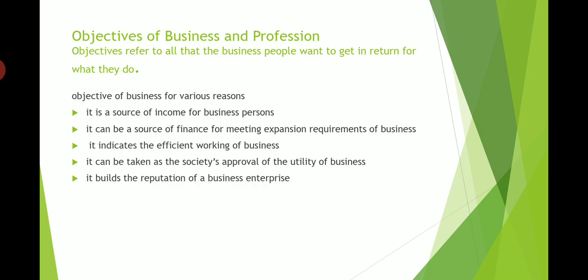Now I think you will have some idea of what the objectives of business can be, or why a person does business. First of all, it is a source of income. When we do business, it involves exchange of money, exchange of goods — it is a societal activity. So the thing is, we generate income. Then, once the business is established, we also try to expand it.